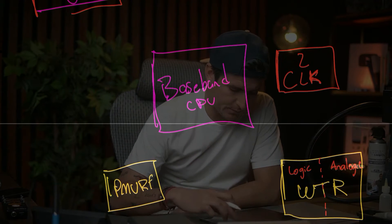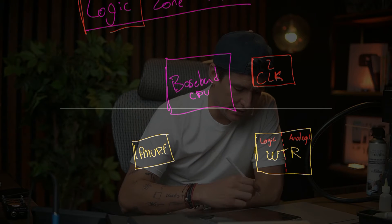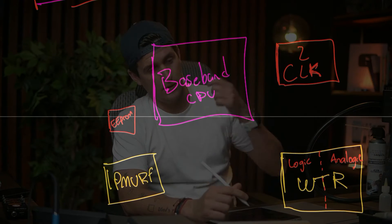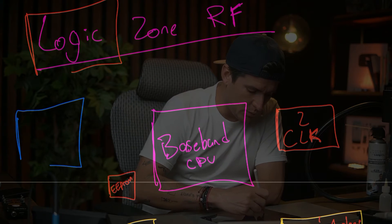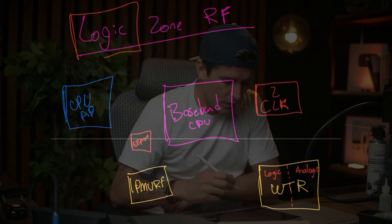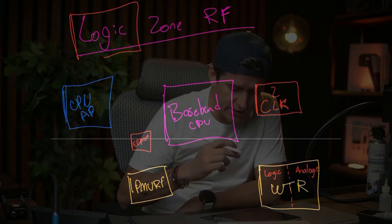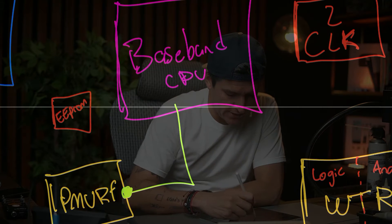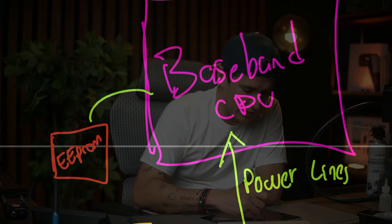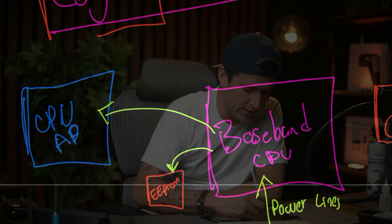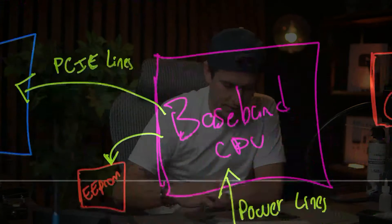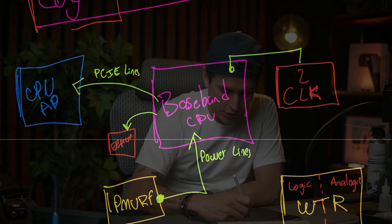We also have to understand that the baseband has one little component that we are going to call the EPROM. And then the baseband talks with the CPU — with our AP. So when the logic part is working, it's because the PMURF sends the power lines to our baseband, the baseband is talking with the EPROM, and the baseband is talking with the CPU through the PCIe lines, with two clocks working.